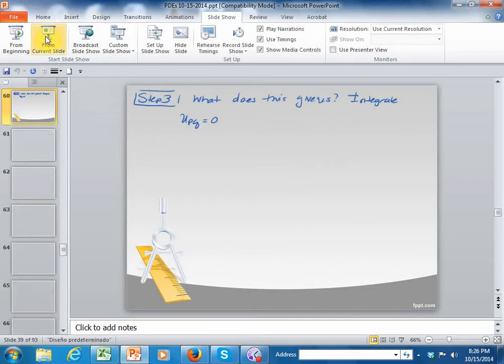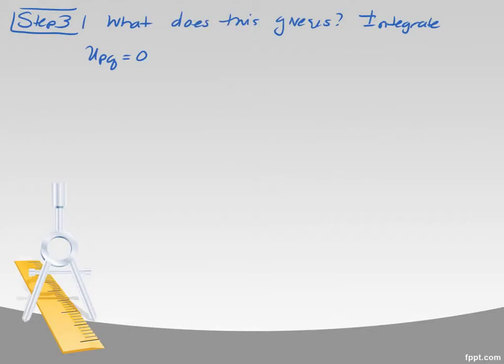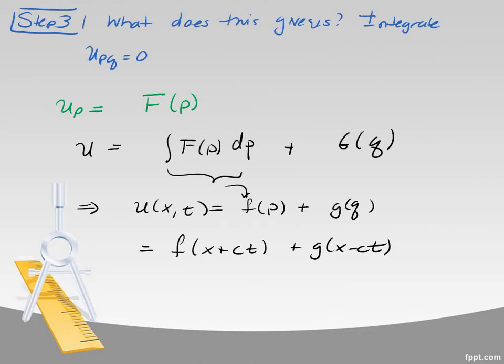So what it says is, what does this give us? Well, this u_pq equals zero. Well, I can integrate. And the first thing I realize is if I integrate with respect to q, because the derivative was zero, then I have a constant, but the constant could be a function of p. So that's the first observation. The second is if I integrate one more time, I'm going to be integrating this with respect to p, but then I could have a constant integration with respect to q. So this is the constant integration and this is the anti-derivative.